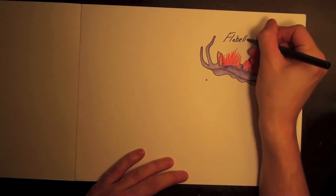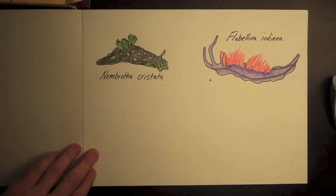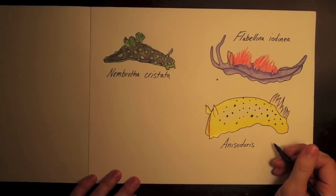There are lots of different kinds of nudibranchs. We know of over 3,000 species that live in diverse habitats all over the world. Some can even live at depths of 2 miles below the sea surface.